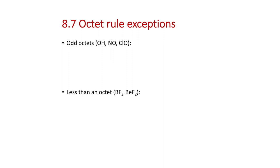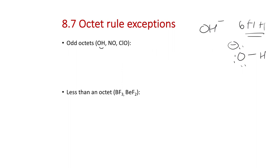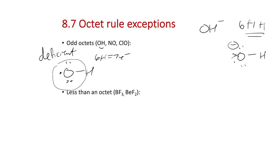There are a few more octet rule exceptions. Hydroxyl radical OH: OH⁻ is easy — 6 + 1 + 1 = 8 electrons, giving oxygen single-bonded to hydrogen with lone pairs satisfying oxygen's octet. To go to neutral OH (hydroxyl radical) with only seven electrons, we kick an electron off one of the lone pairs on oxygen, leaving oxygen deficient of an octet. Since we can't easily kick off a bonding pair, the lone pairs are the easier choice.